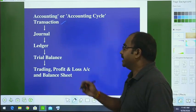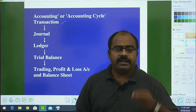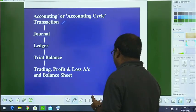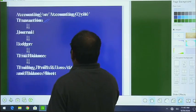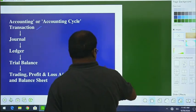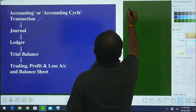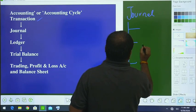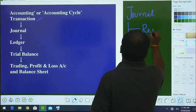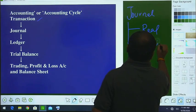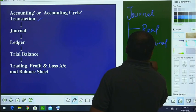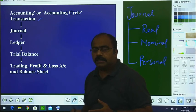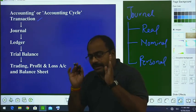Transaction means whatever financial transactions take place become part of accounting. The second step is the journal. Journal is the primary stage of accounting — it is basically the language of accounting. When you journalize, you follow the different rules of accounting — the three golden rules: real, nominal, and personal.